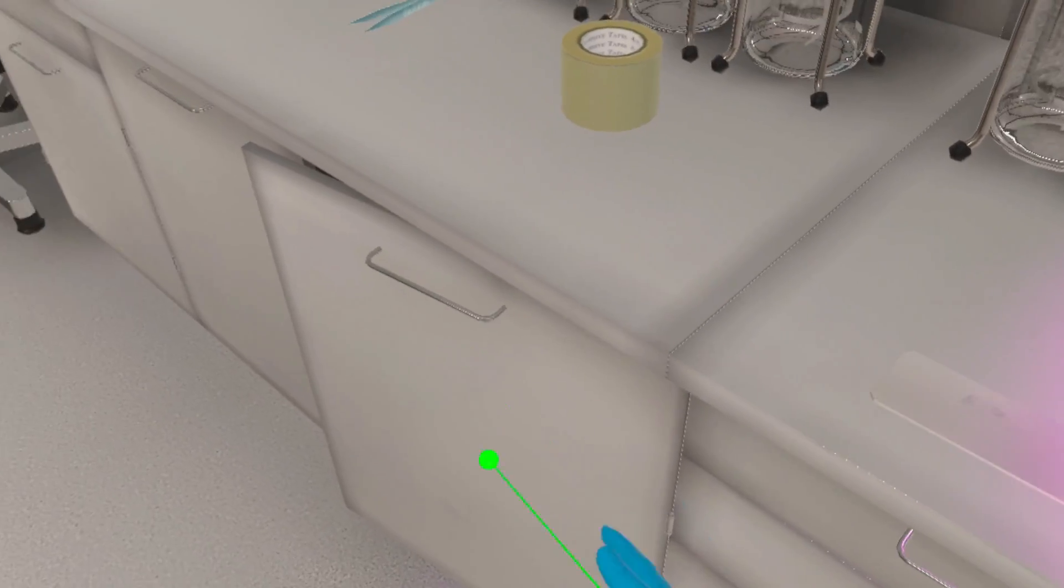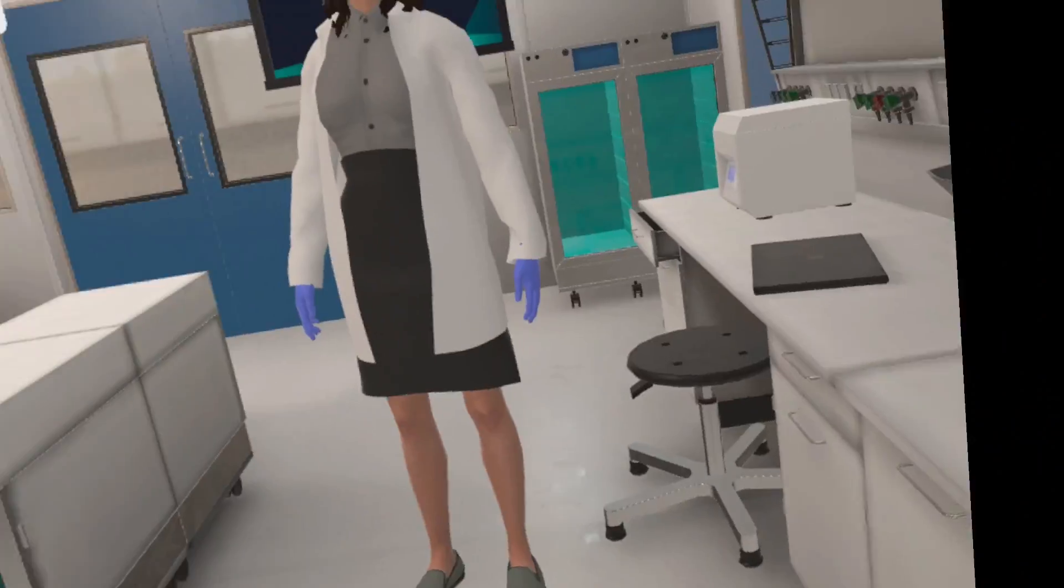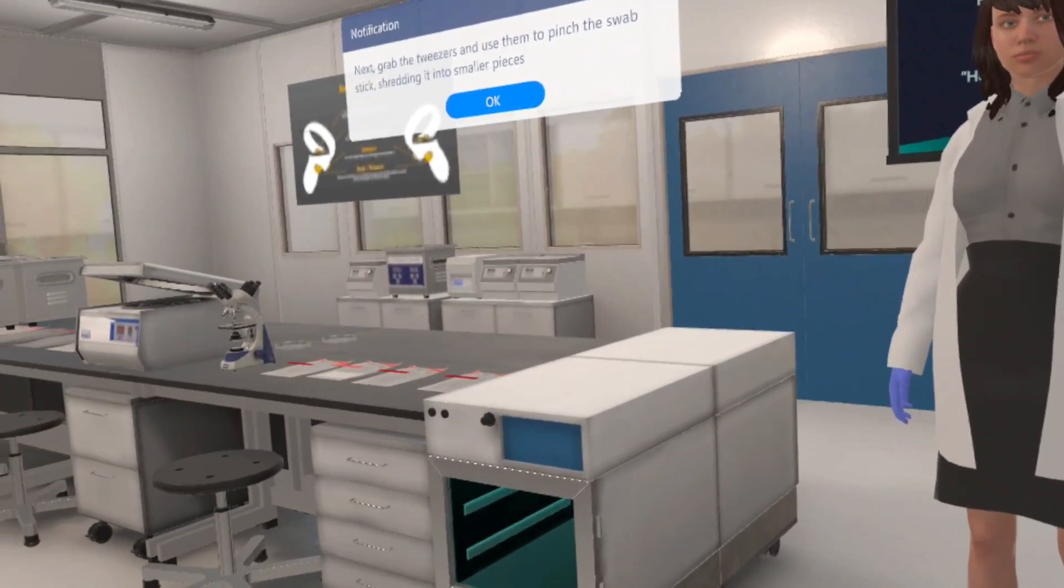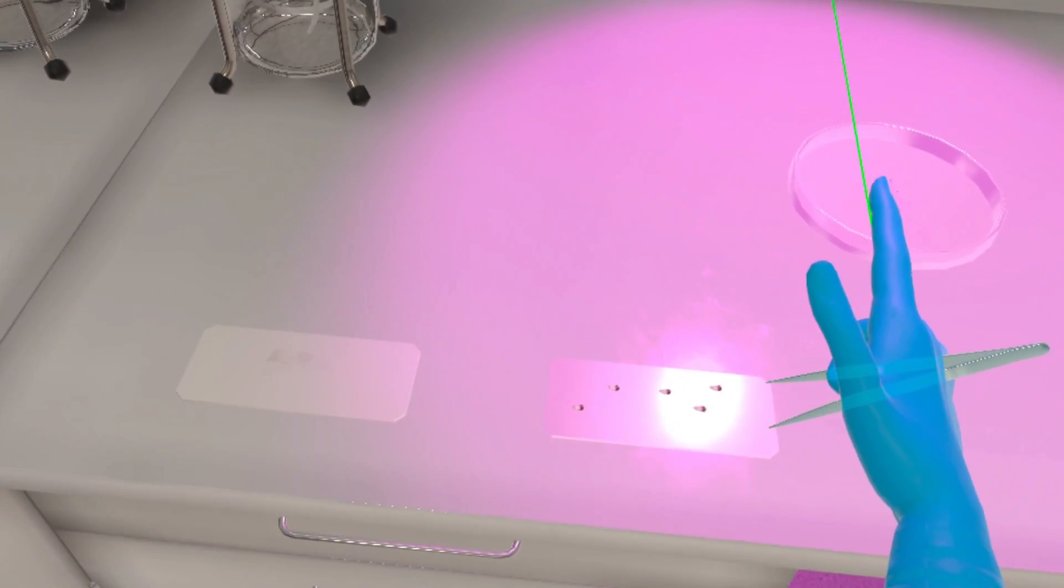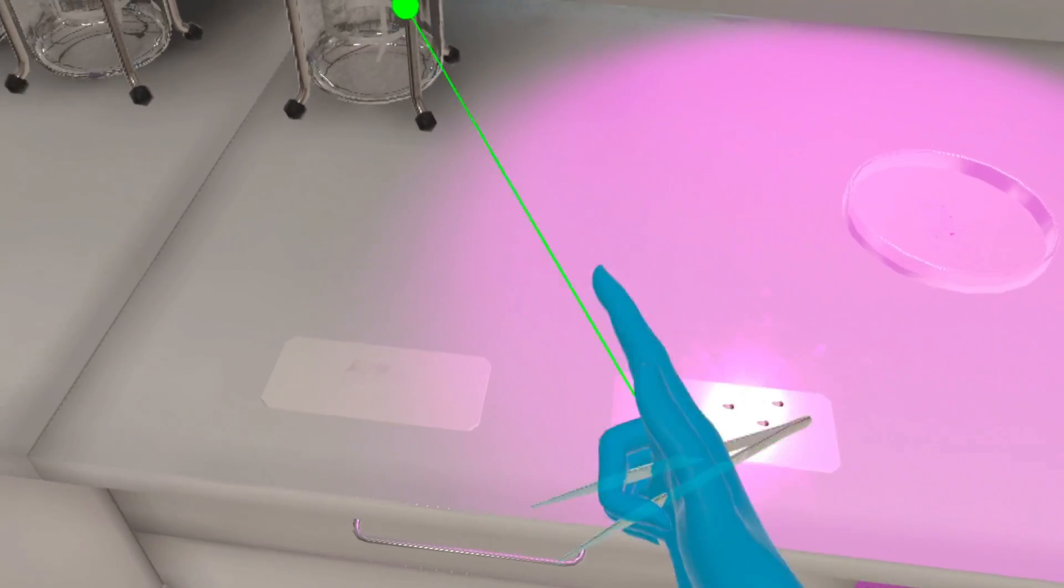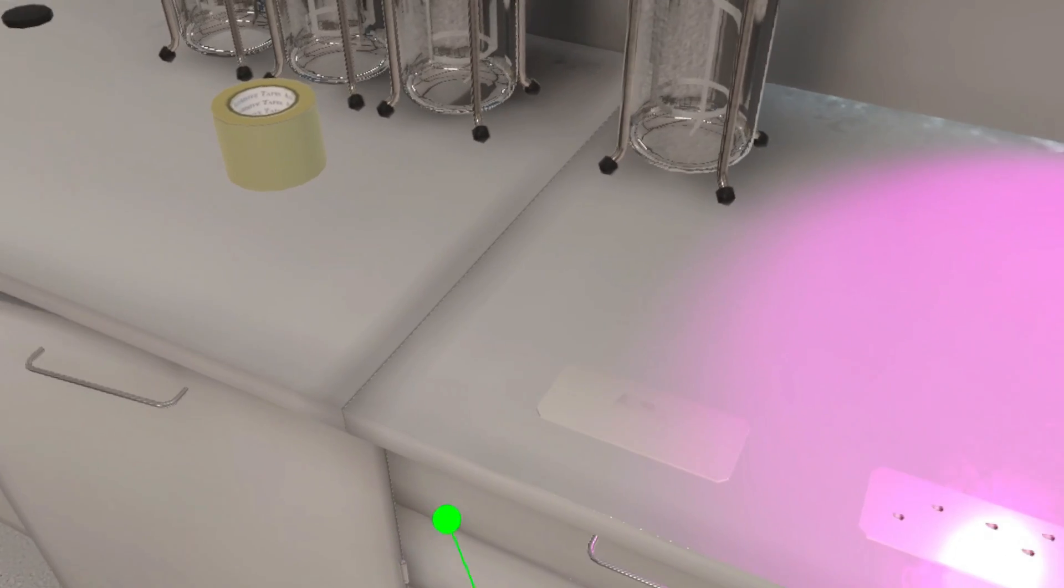Next, grab the tweezers and use them to pinch the swab stick, shredding it into smaller pieces. Let's pick a few of these pieces using the tweezer and move towards the Eppendorf stand.